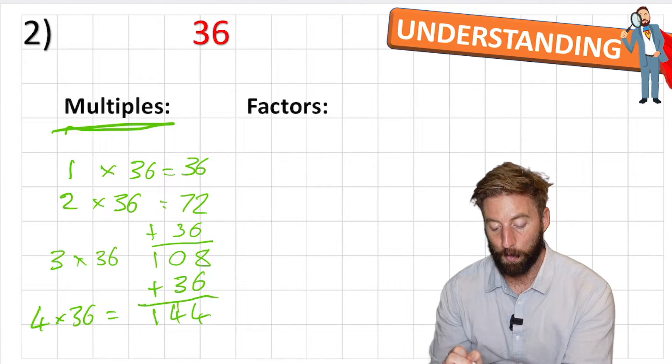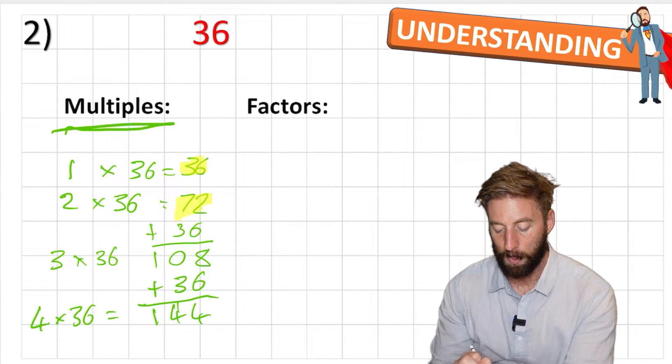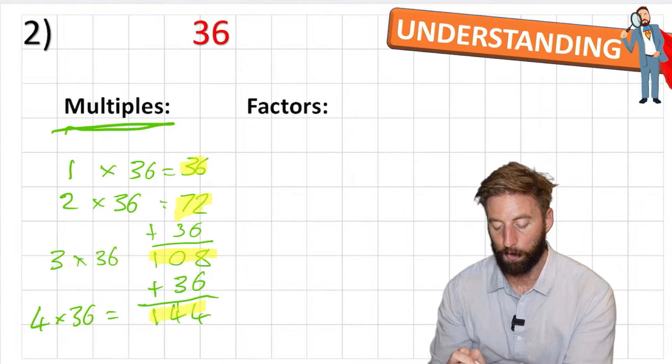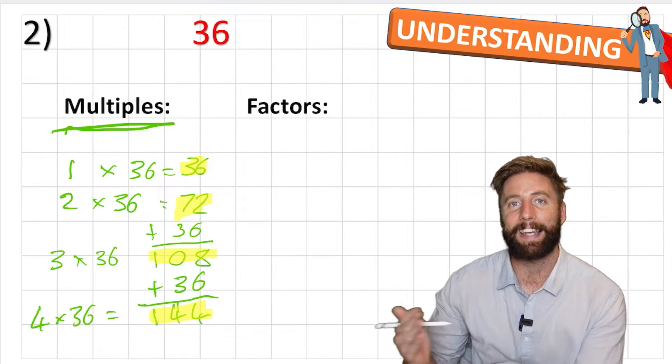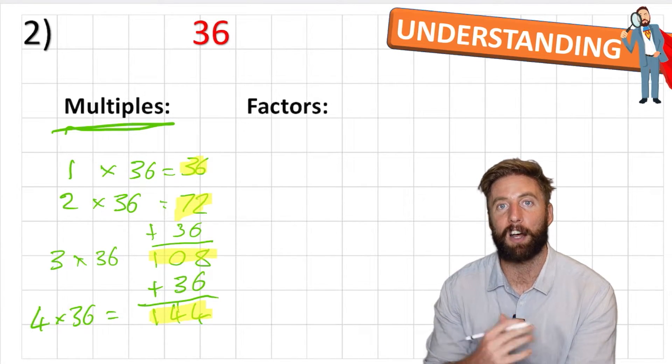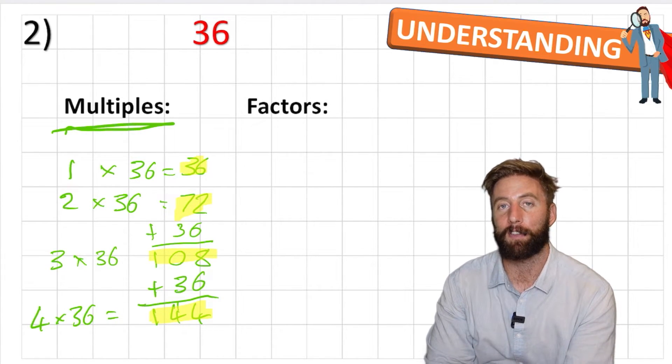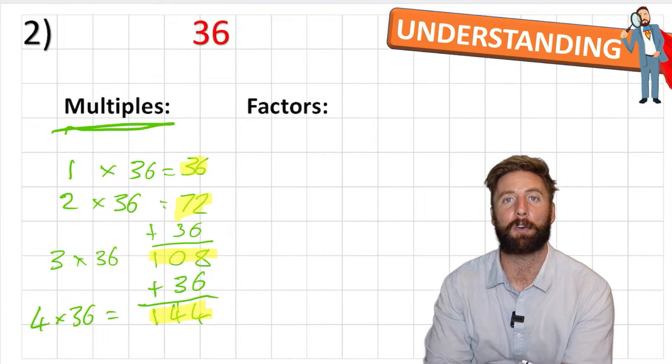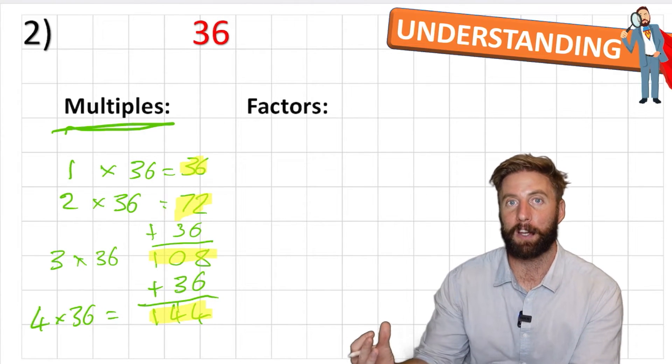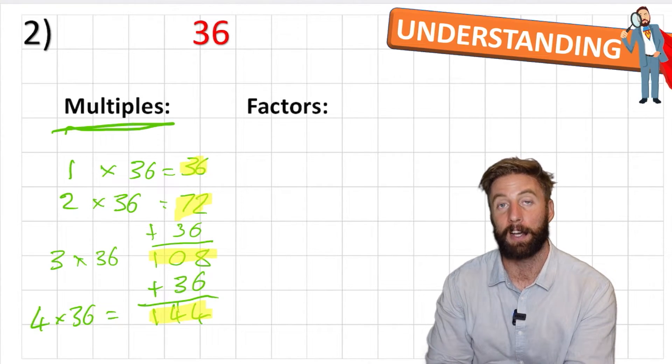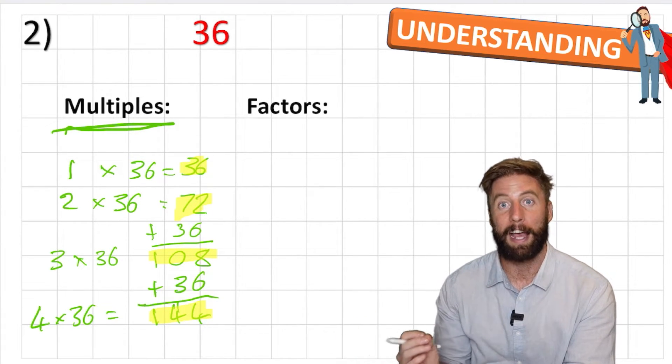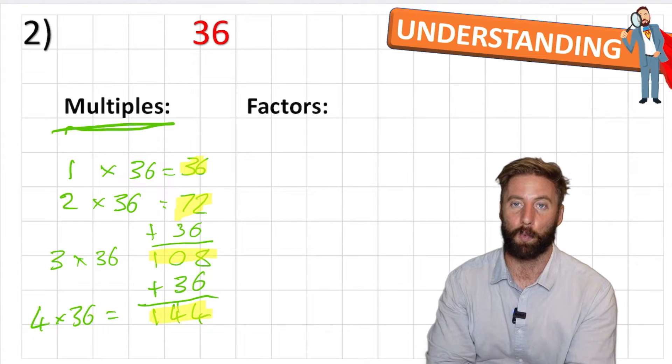So some multiples of 36 would be 36, 72, 108 and 144. And this could go on indefinitely for as long as there are integers. I could do 10,153,622,112 times 36. That's going to give me an answer. And that is a multiple of 36. So we could go on forever. And don't forget, negatively as well.